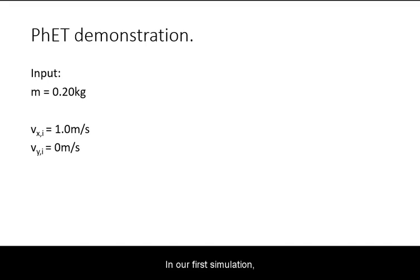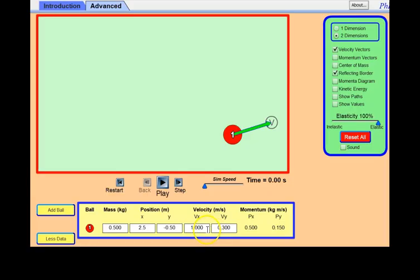In our first simulation, we will use a small mass ball with an initial x velocity but 0 y velocity.